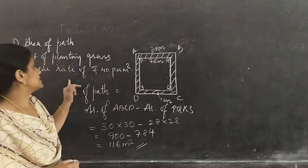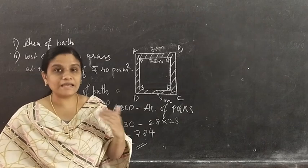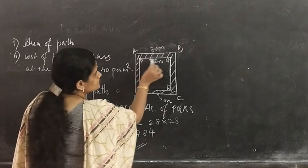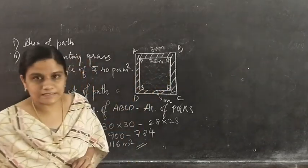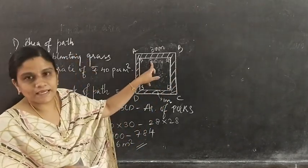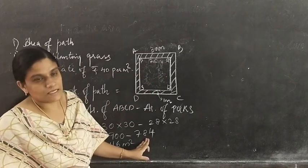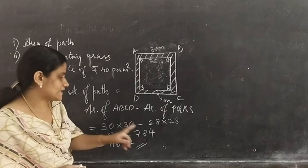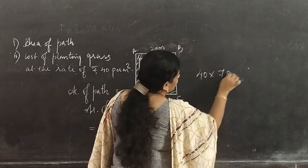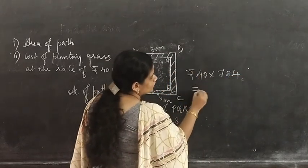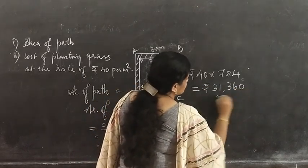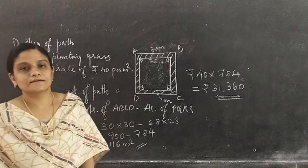The second part: cost of planting grass in the remaining portion at the rate of rupees 40 per metre square. We have to plant grass inside the garden in the inner portion. The area of that portion is 28 into 28 equals 784 metre square. For 1 metre square it is rupees 40, so for 784 metre square it is 40 into 784, giving rupees 31,360. This is the total cost for planting grass.